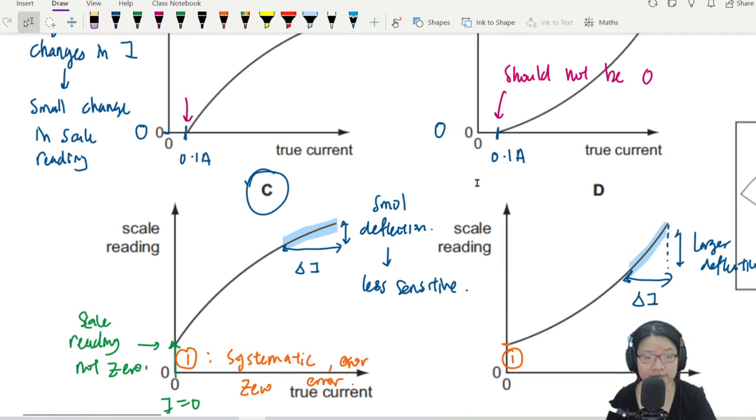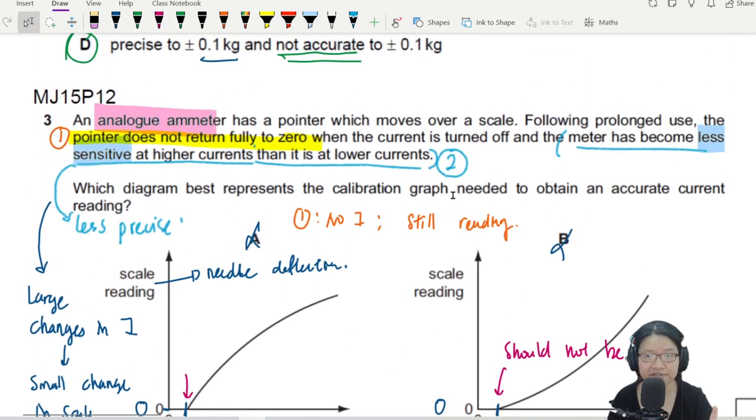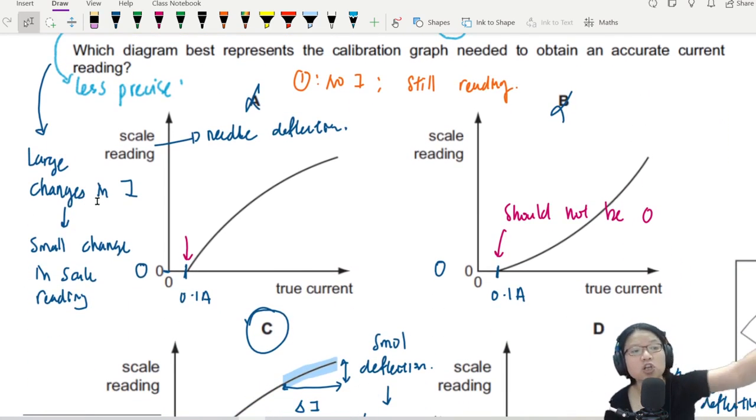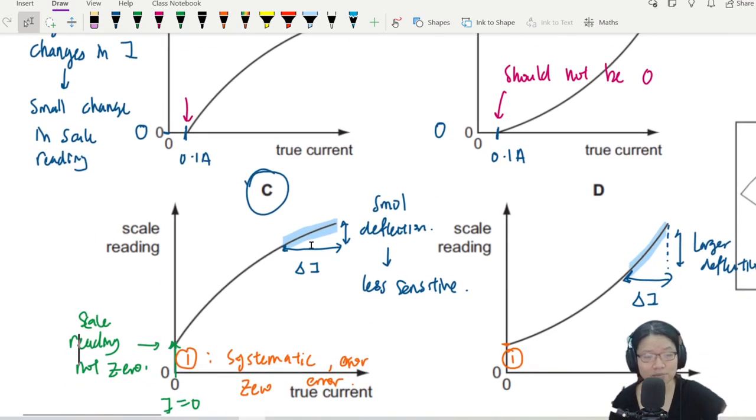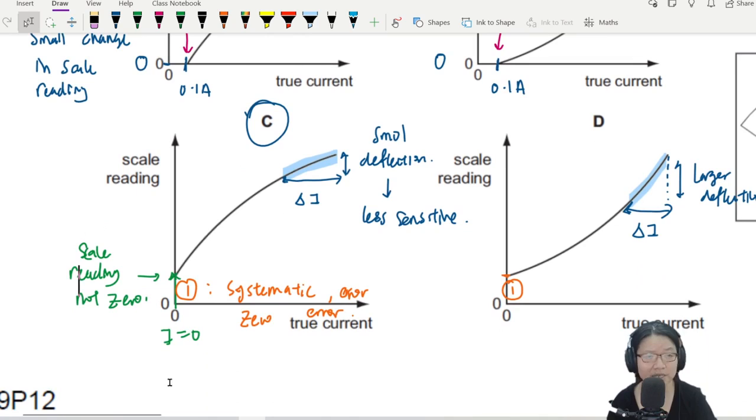And then the second issue is large current, less sensitive. Less sensitive at large current. Less sensitive means I need to change a lot, then only the scale will detect. So it's shown by this. I change a lot, but the scale only change a bit. We always complain about someone not being sensitive enough. That means you need to actually change a lot of your emotions before the person notices that you change. So I need to change a lot of the current before I get some deflection. Whereas this one, I change the same amount of current, wow, my deflection is so big. So learn to read the calibration curve. There will be this question.